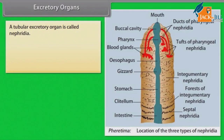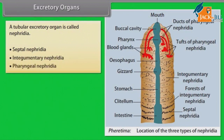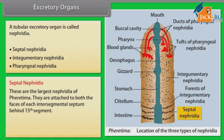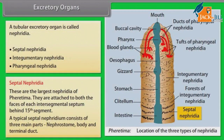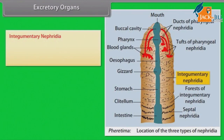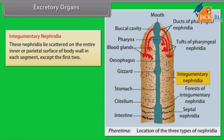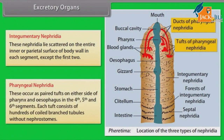Excretory Organs: A tubular excretory organ — the nephridium — is present. Pharyngeal and septal nephridia are the largest nephridia of Pheretima; they are attached to both faces of each intersegmental septum behind the 15th segment. The typical septal nephridium consists of three main parts: nephrostome, body, and terminal duct. Integumentary nephridia lie scattered on the inner parietal surface of the body wall in each segment except the first two. Pharyngeal nephridia occur as paired tufts on either side of the pharynx and oesophagus in the fourth, fifth, and sixth segments; each tuft consists of hundreds of coiled, branched tubules without nephrostomes.